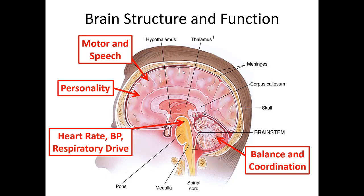The core parts of the brain dictate heart rate, blood pressure, respiratory drive, balance and coordination, and all essential functions of any living being. As you move out more toward the periphery, that's the higher executive functions. As the brain gets injured, things that get sacrificed — especially in the frontal cortex — are areas more easily sacrificed, while the essential core functions are very protected in the middle based on the design of the skull.